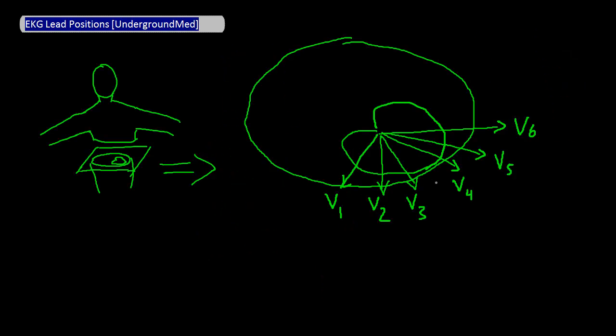Each of the six precordial leads measures an electrical vector going towards it from a set point in the heart, as shown here. Notice the direction of the electrical vector corresponding to each precordial lead. Also notice that V1 points anteriorly and slightly to the right of midline. As another example, V6 points predominantly laterally.